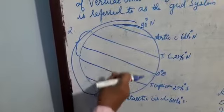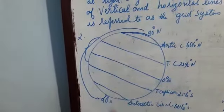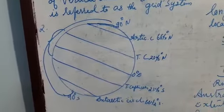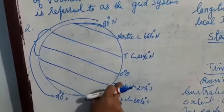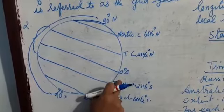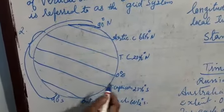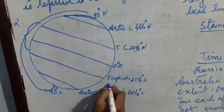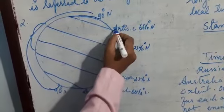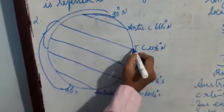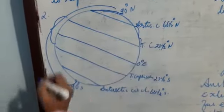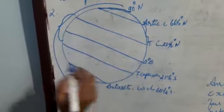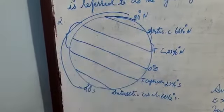You can write any two or three points for the characteristics of latitudes. The equator is the greatest circle and others are small circles. The region from 23 and a half degree north to 23 and a half degree south is the torrid zone. From 66 and a half degree to 23 and a half degree north is the temperate zone, and similarly in the south. Beyond 66 and a half degrees is the frigid zone.